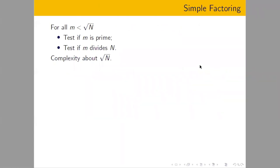How can we simply factor? We go over all numbers up to the square root of N, and if a number is prime, we test if it divides N. When we exhaust all numbers up to the square root, we've exhausted all factors. What remains must be prime — a single prime that is bigger than the square root of N. The complexity of this is about square root of N. That's the trivial method.